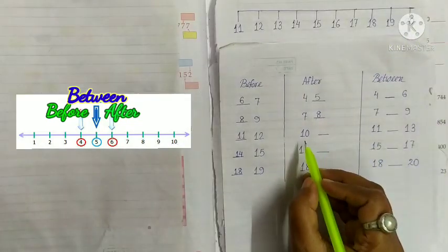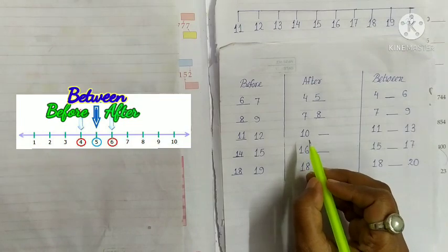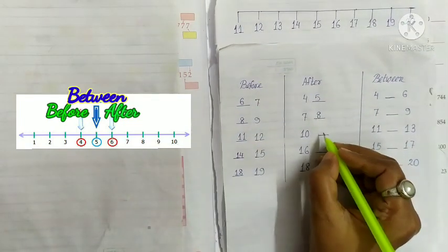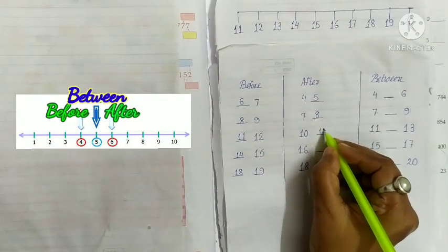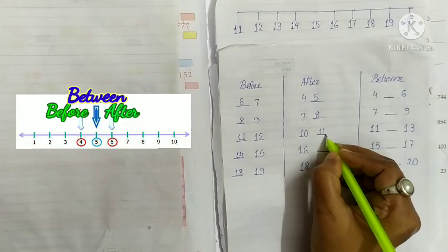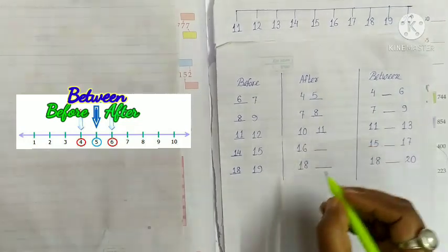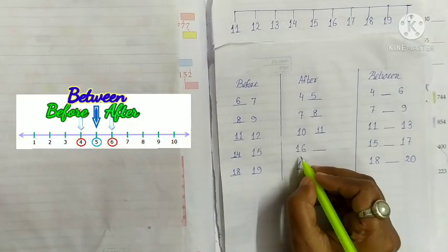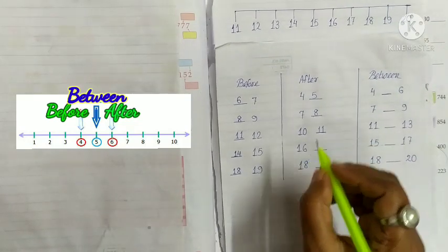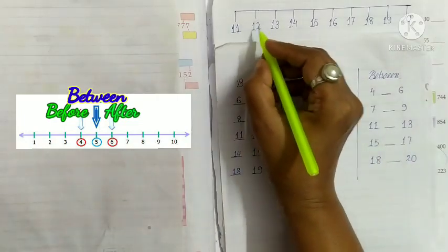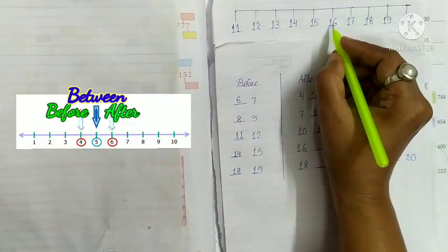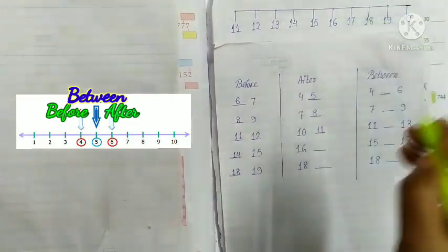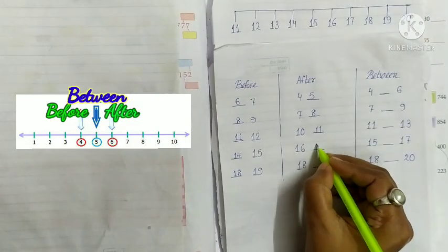Next, 10. After 10 is 11. Write 11. Next, 16. What comes after 16? 11, 12, 13, 14, 15, 16. After 16 is 17. Write 17.